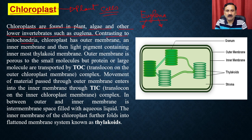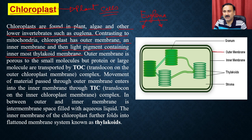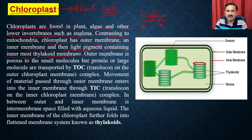Contrasting to the mitochondria, the chloroplast has an outer membrane, an inner membrane, and then a light-pigment-containing innermost thylakoid membrane. The outer membrane is porous to small molecules, but proteins or large molecules are transported by the TOC — which stands for the Translocon on the Outer Chloroplast membrane complex.